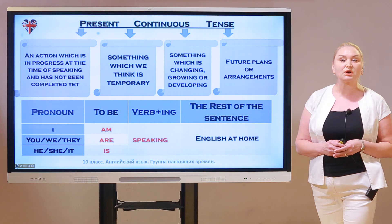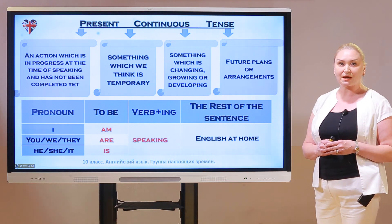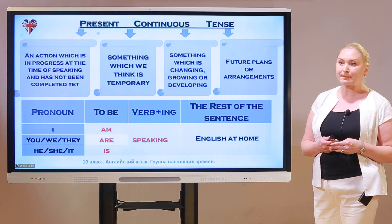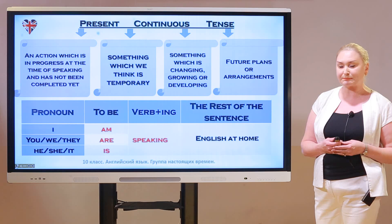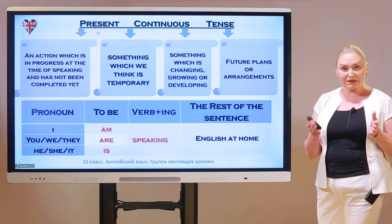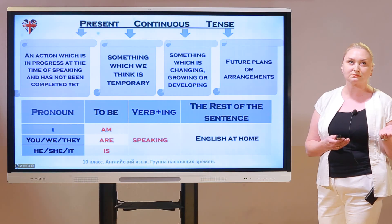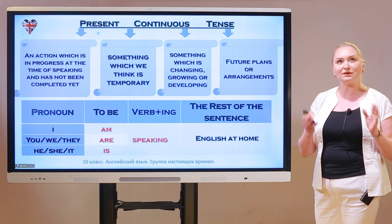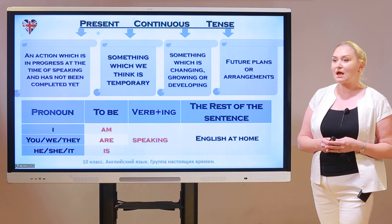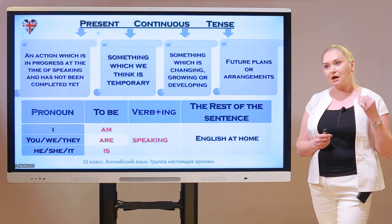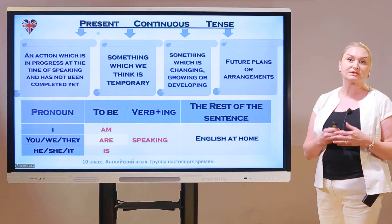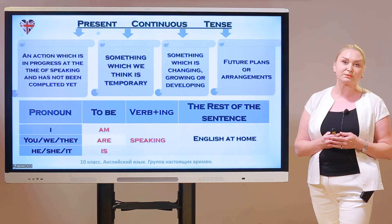The next tense is present continuous. It describes an action which is in progress at the time of speaking and hasn't been completed yet. We also use it when something is temporary — meaning changeable, like it's cold now but then it's warm. It's used for something that is changing, growing, or developing. And finally, we use present continuous to describe future plans or arrangements.